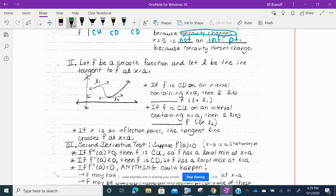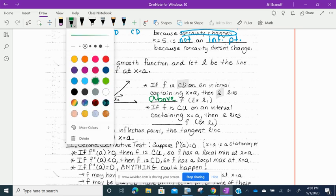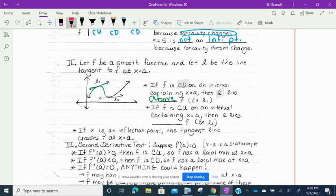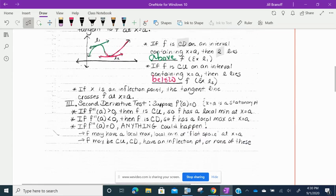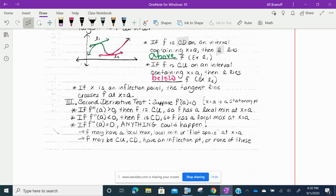Let F be a smooth function and let L be the line tangent to F at the point x equals a. So if F is concave down on an interval containing x equals a, then L must lie above F. If F is concave up on this interval containing x equals a, then L would have to lie below F. And then if x is an inflection point, the tangent line crosses F at x equals a.